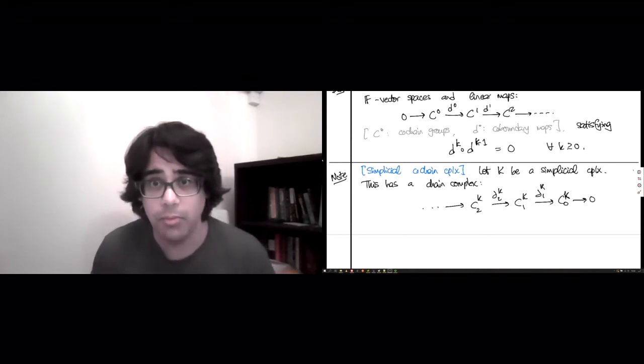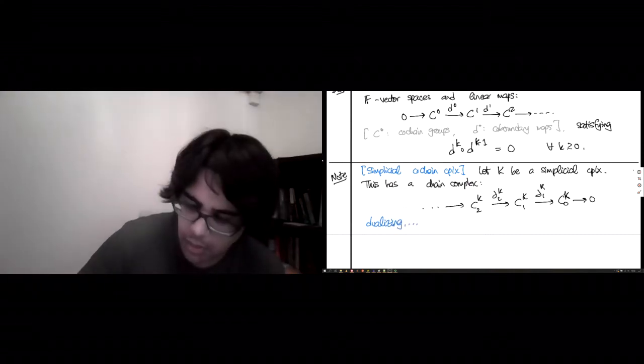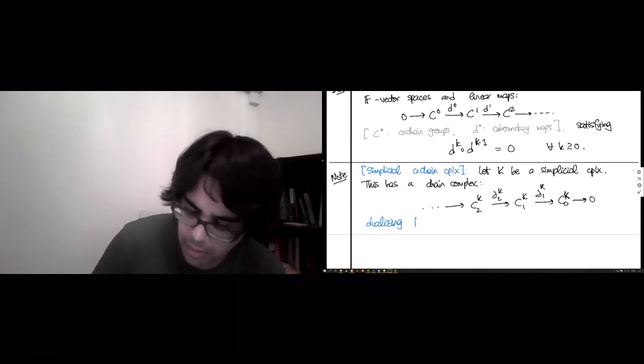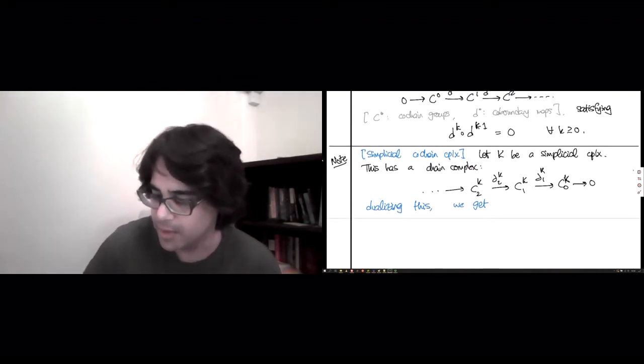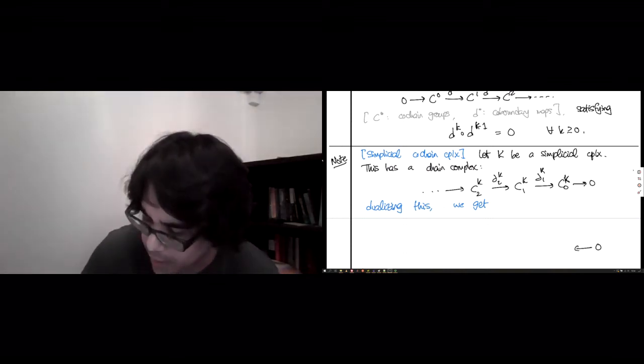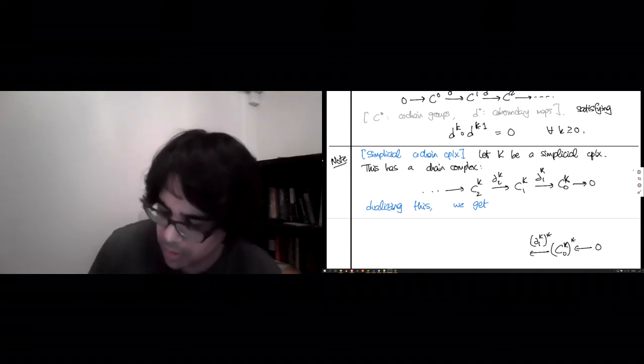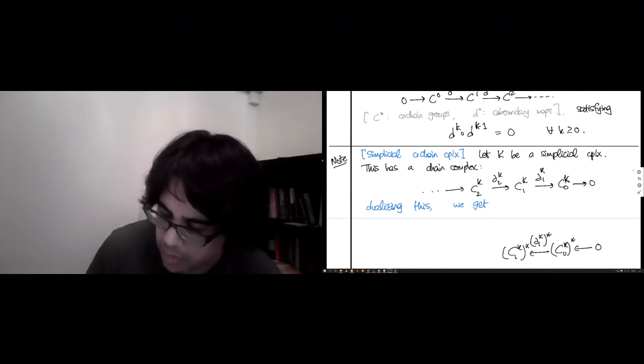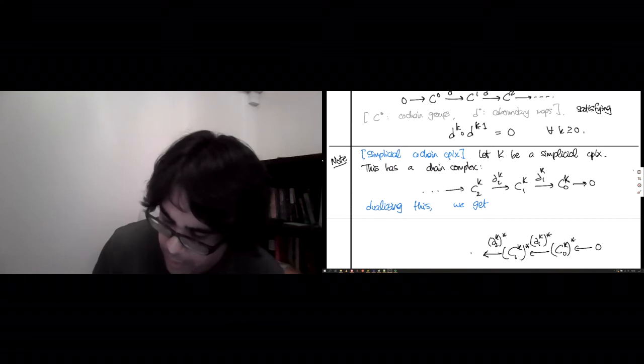The co-chain complex is what we get when we dualize this. Dualizing this, we get 0 going to c0(K) dual, the map has flipped, and here you have d1(K) dual, c1(K) dual. This is extremely cumbersome to write, especially going backwards, with d2(K) star and so on. We get this backward pointing sequence of vector spaces and linear maps.